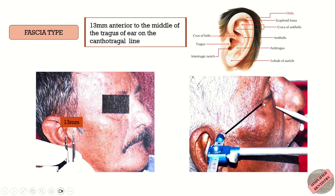This is the cantho-tragal line, which is a line drawn from the middle of the tragus to the outer canthus — that is, the corner of the eye where the upper and lower eyelids meet. On this cantho-tragal line, the center of condylar rotation is marked 13 mm anterior to the tragus of the ear.